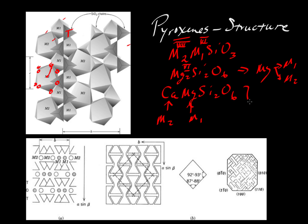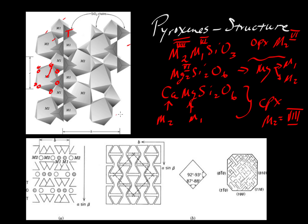For the clinopyroxene, something like diopside, then the M2 will be in eight-fold coordination. But if we're talking about the orthopyroxenes, the M2 will be in six-fold, so these M2 sites will be a little bit smaller than what's illustrated here. I believe in the diagram from Dutron Klein this is the mineral jadeite, NaAlSi2O6, with sodium on the M2 site, aluminum on the M1, and then silicon occupying each of the tetrahedral sites.